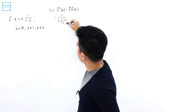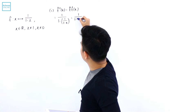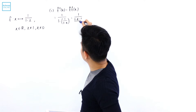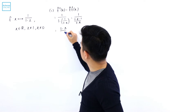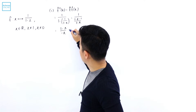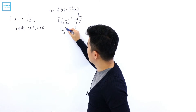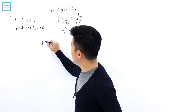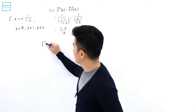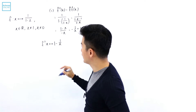So it is 1 over (1 minus (1 minus x)), which is equal to 1 over ((1 minus x minus 1) divided by (1 minus x)), which is equal to (1 minus x) divided by (minus x), which simplifies to (minus 1 over x) plus 1, giving us an expression of 1 minus 1 over x for f²(x).